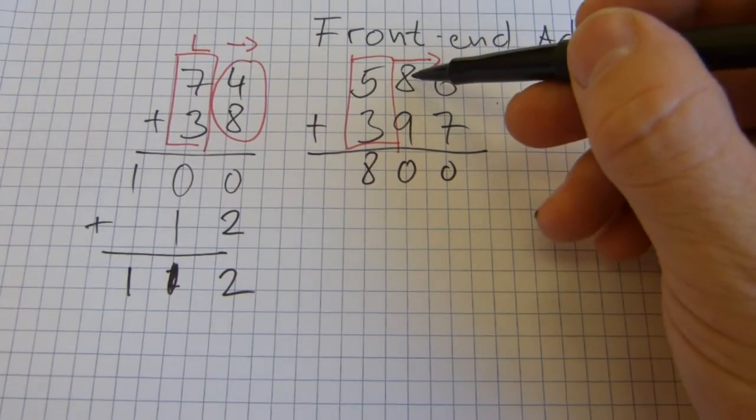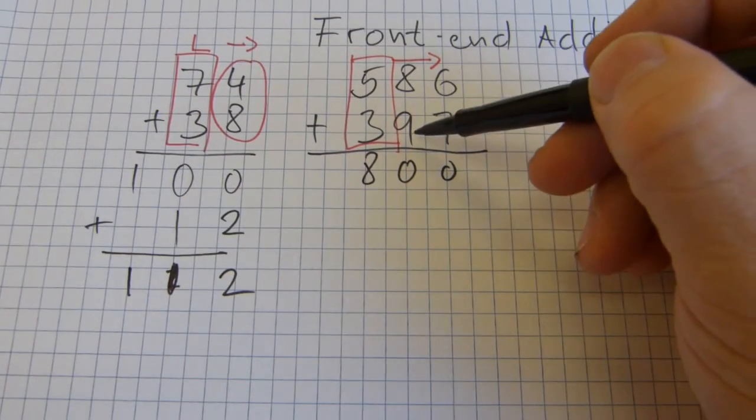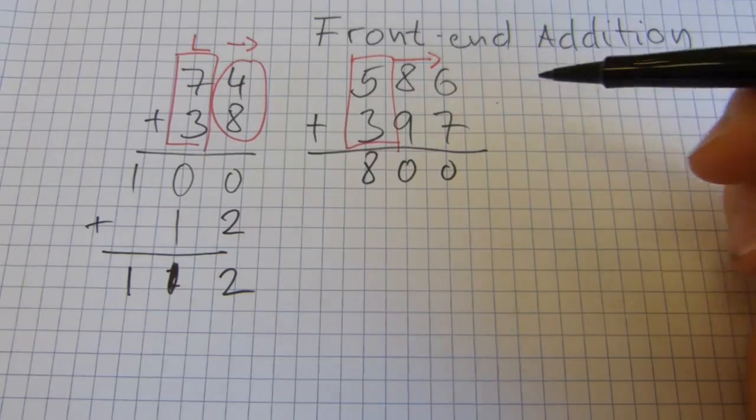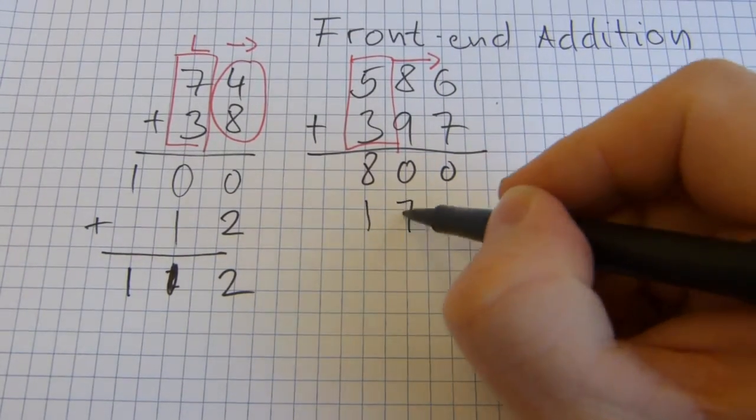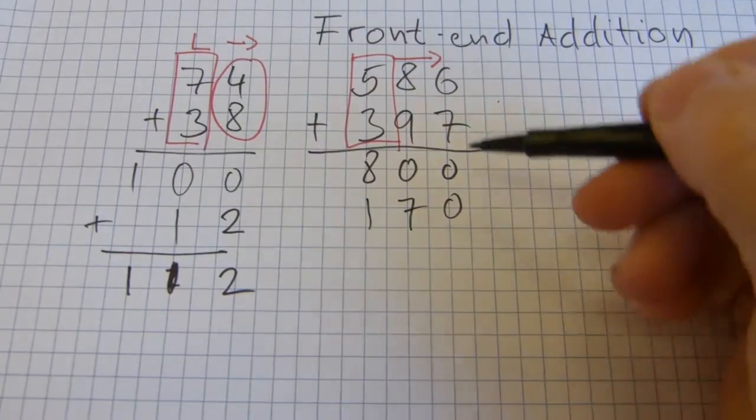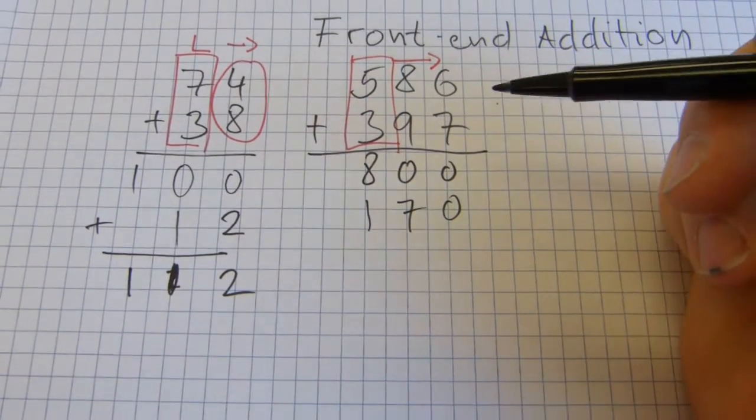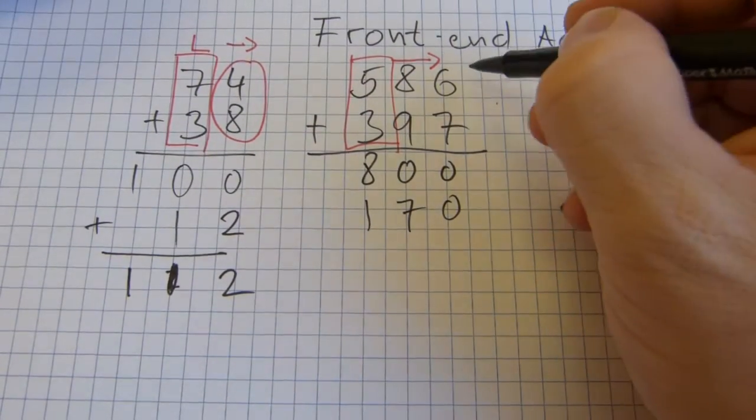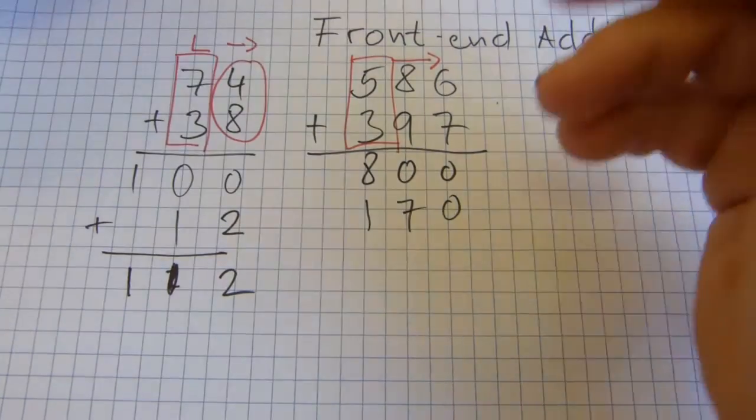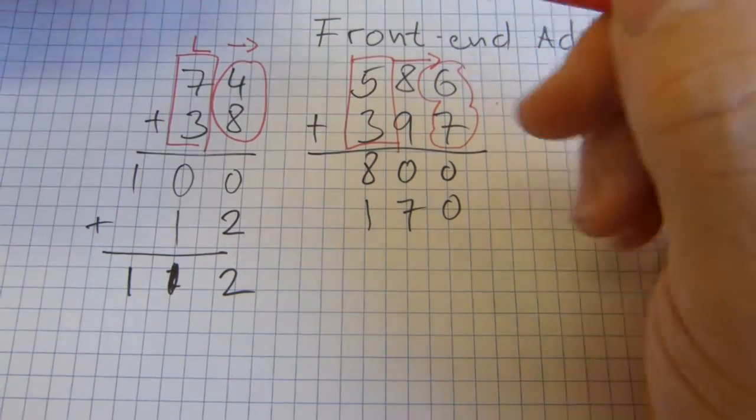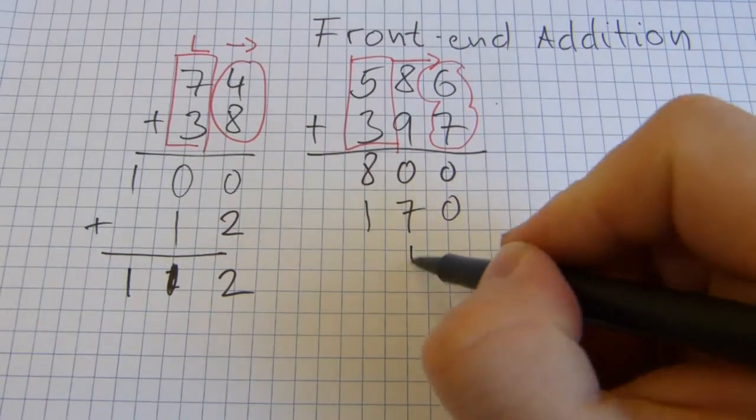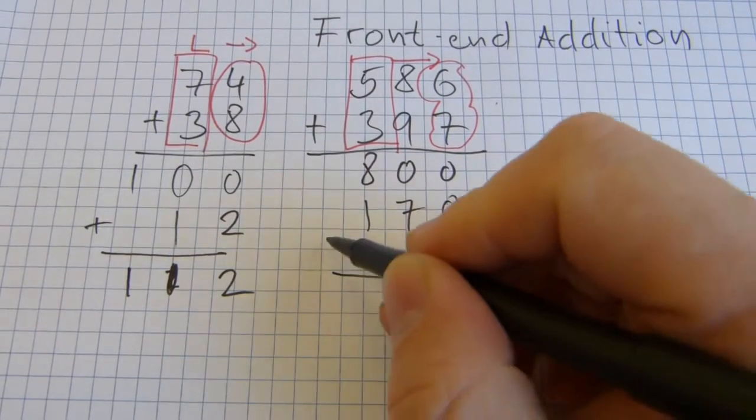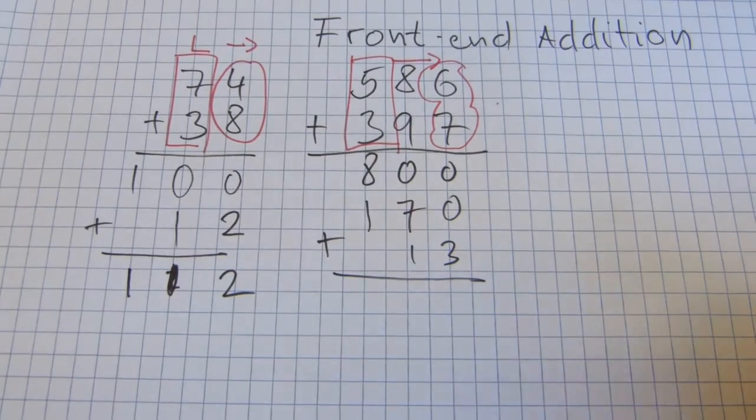Next one is 8 plus 9, but it's 80 plus 90. 80 plus 90 is 170. So, how that's written down is this way with matching it with the place value columns. Last one is these two guys here. There, 6 plus 7. 6 plus 7 is 13. So, you write down 13, like so. And then you add it.